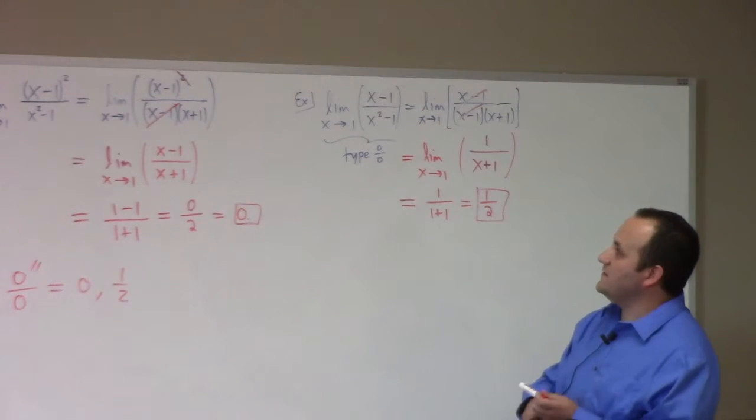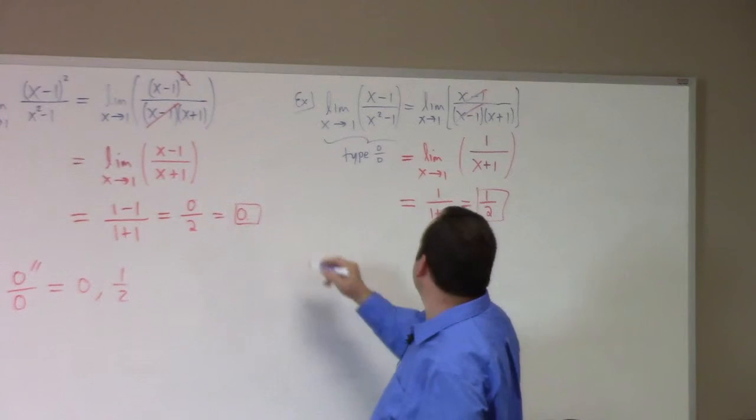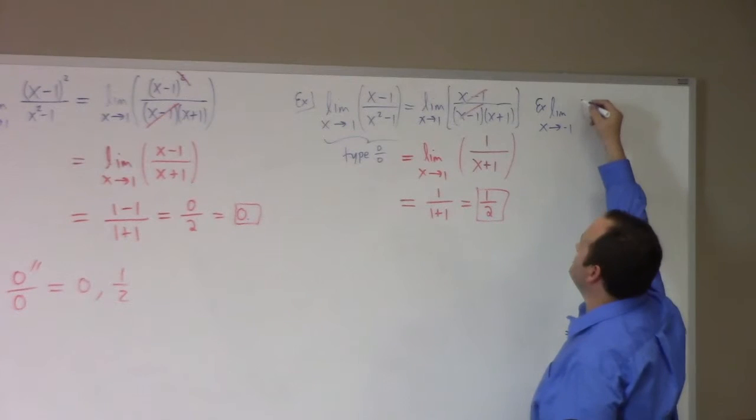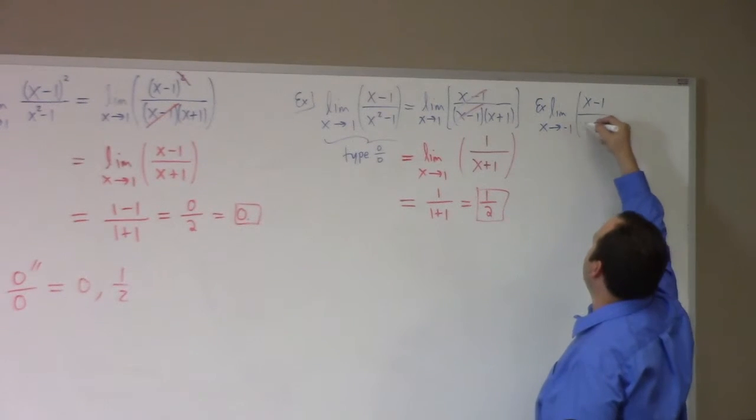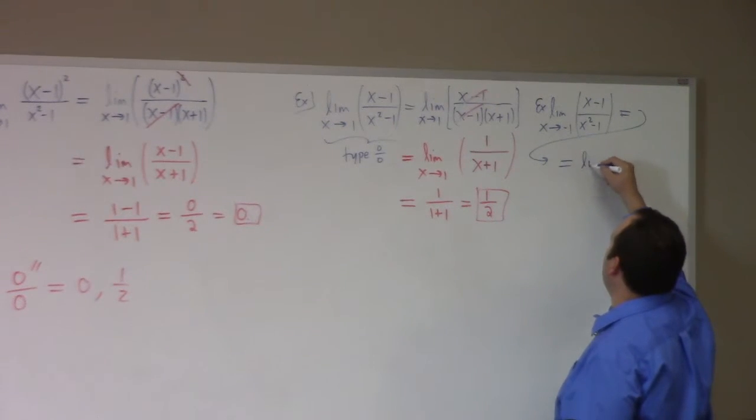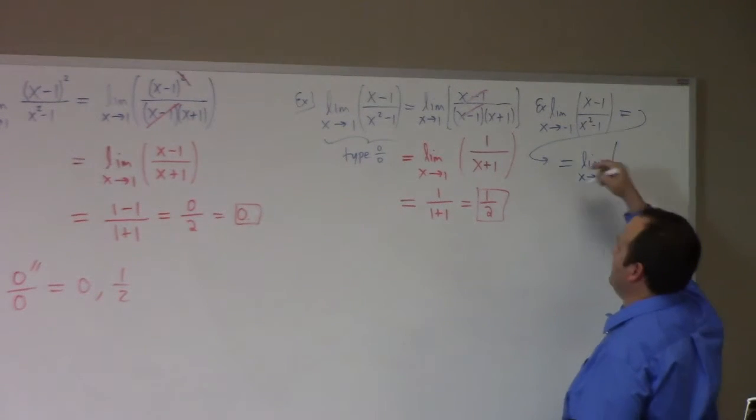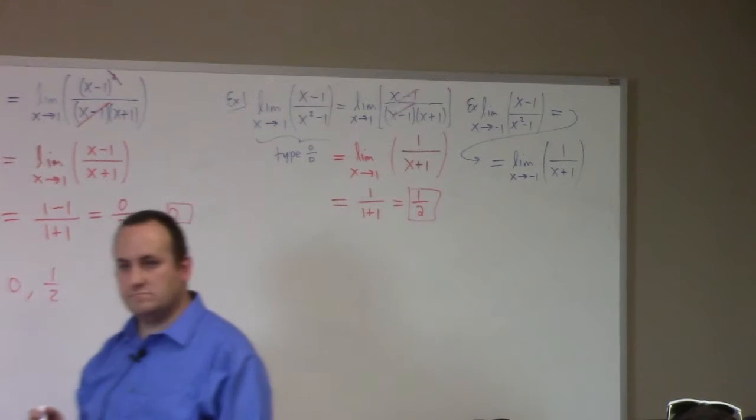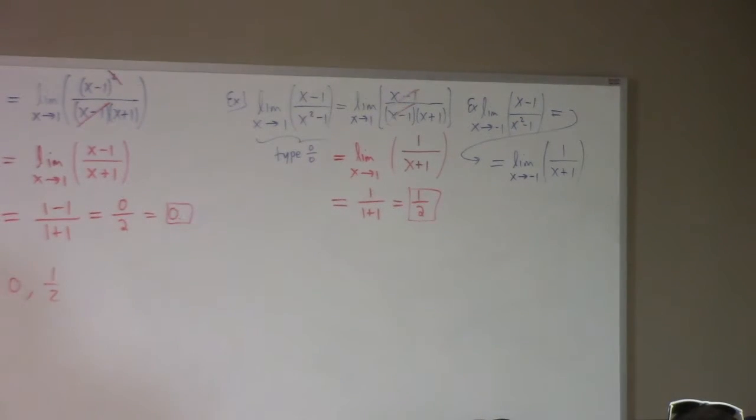What would happen if instead of going to one I went to minus one here? You'd still have the cancelling of the x minus one factors. So through the same steps I still get one over x plus one. But what's the deal with that limit? That's type what? Type one over zero.